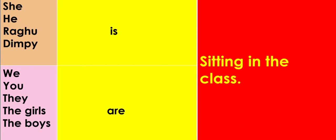Now, 'are'. Are is always used with plural and with you. You may be singular and may be plural. With you, with we, with they, and with plural naming words we always use are. We ke saath, you ke saath, they ke saath aur plural naming words ke saath. You singular bhi ho sakta hain aur plural bhi ho sakta hain. We are sitting in the class. You are sitting in the class. They are sitting in the class. And the girls are sitting in the class. The boys are sitting in the class.